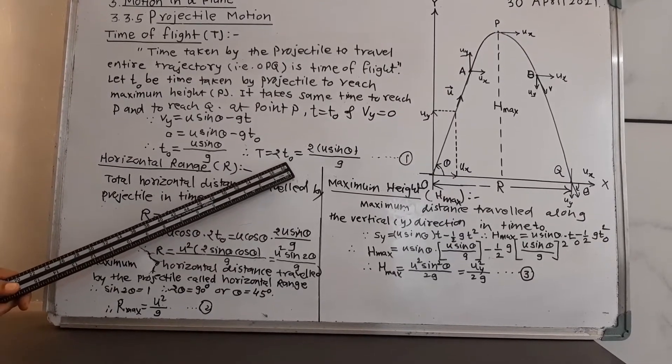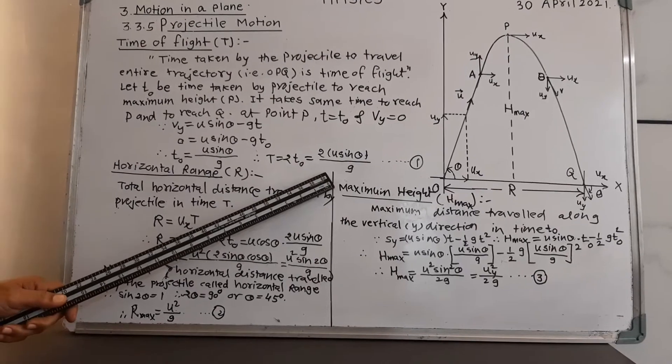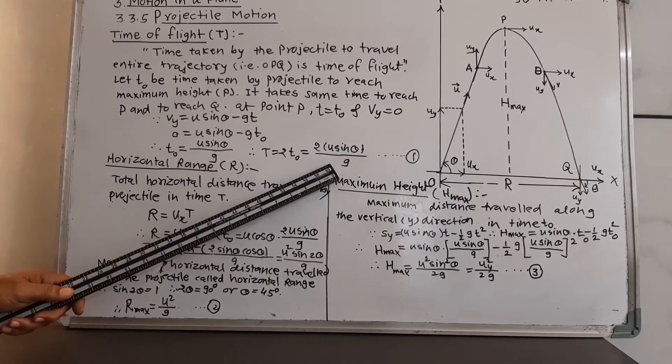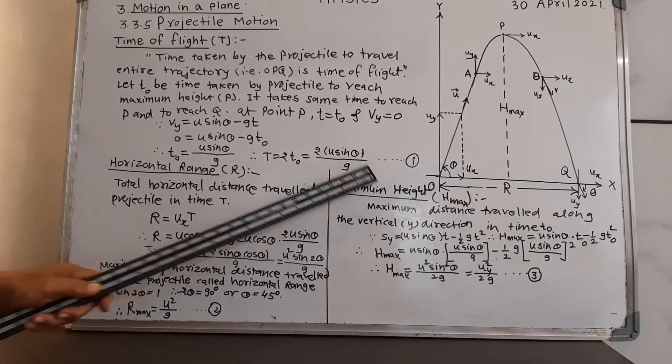Therefore, T equal to twice T0 which is capital T, the time of flight, which is twice U sin theta upon small g. Call this as equation number 1.